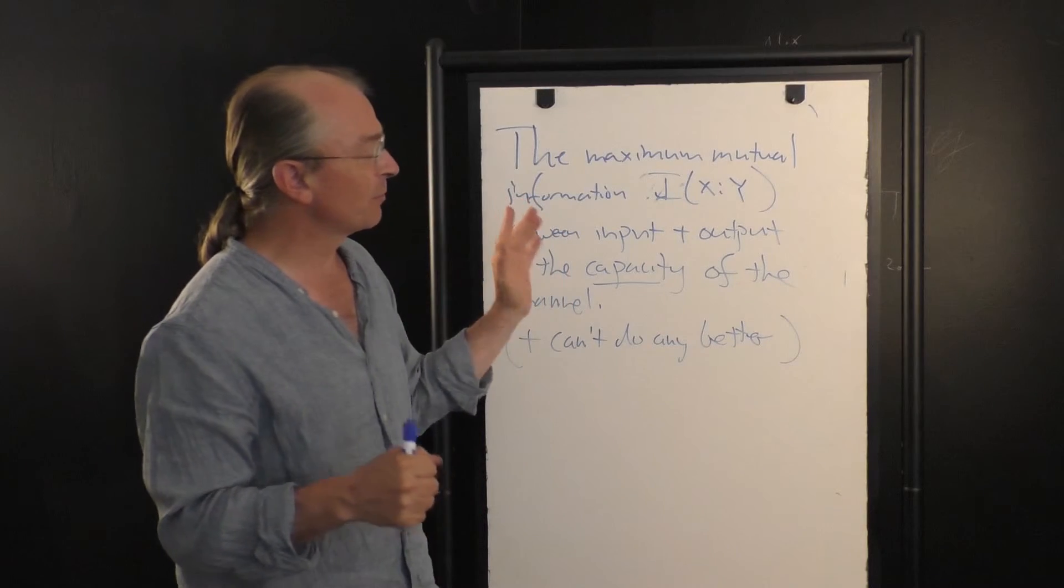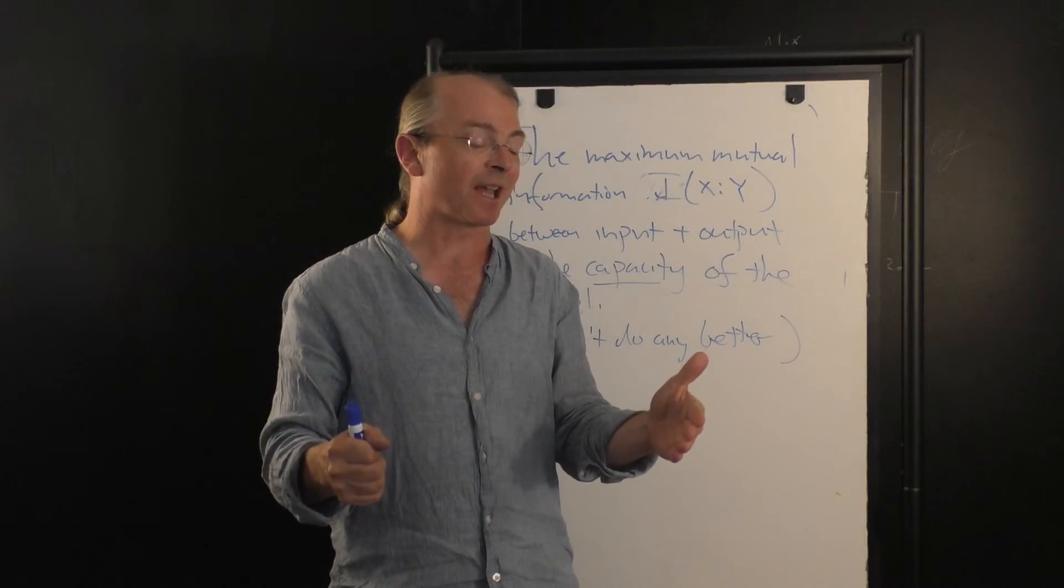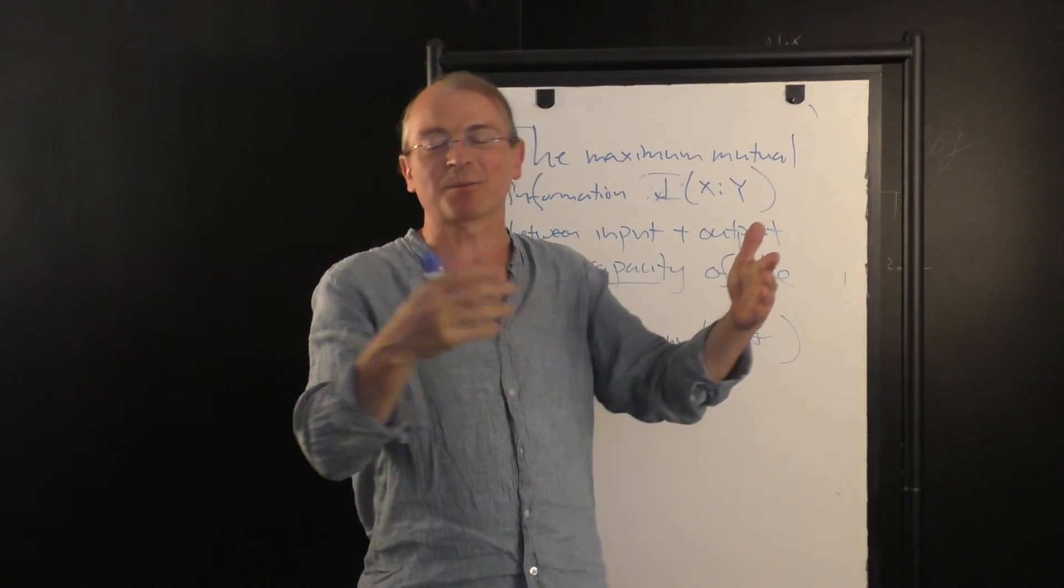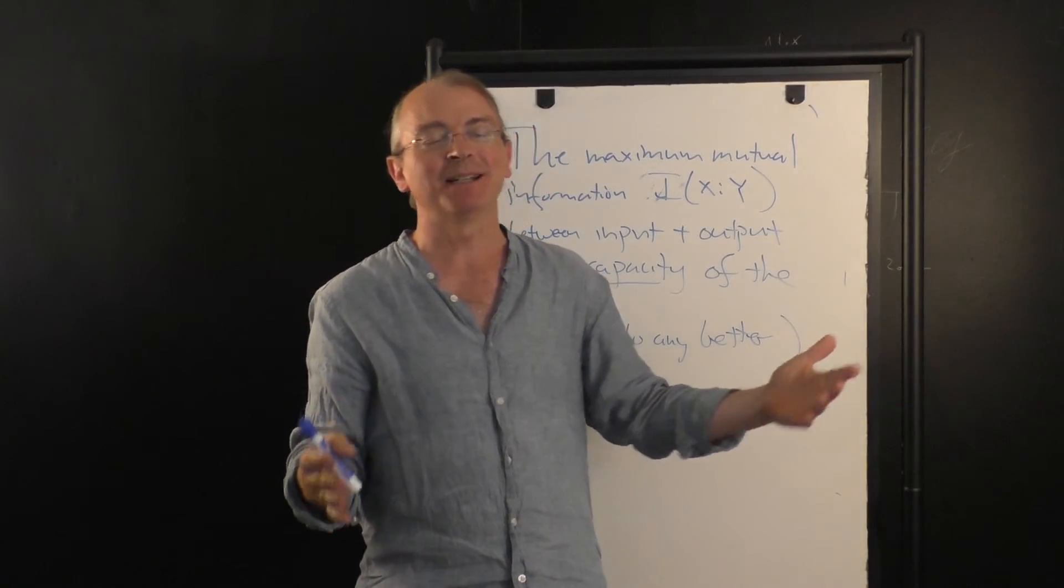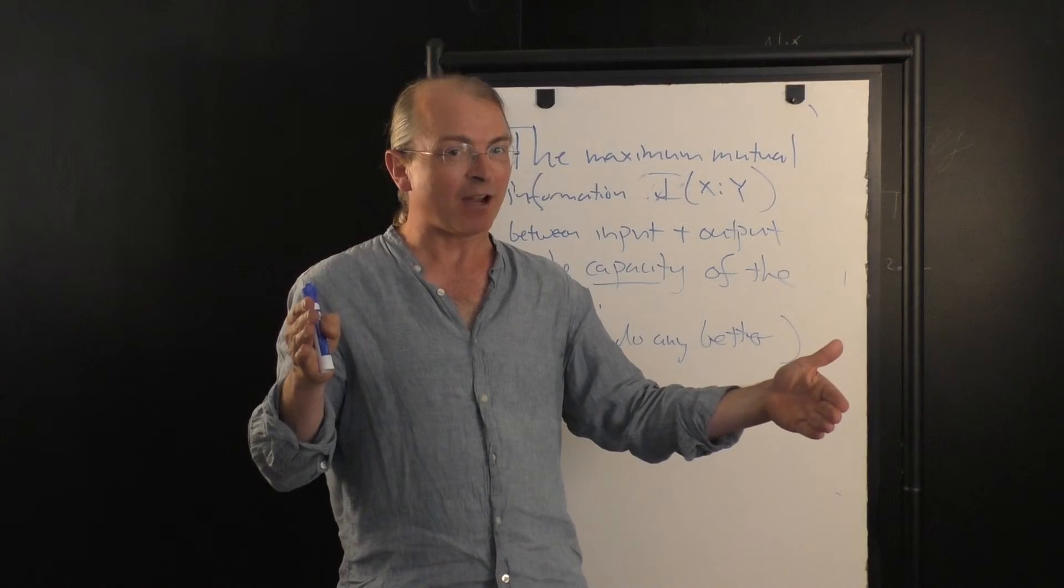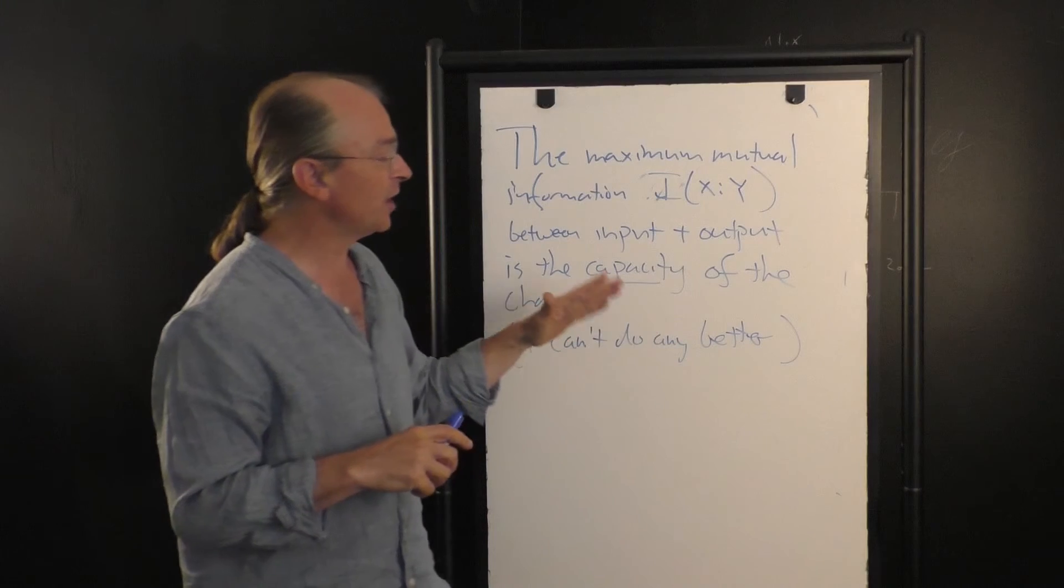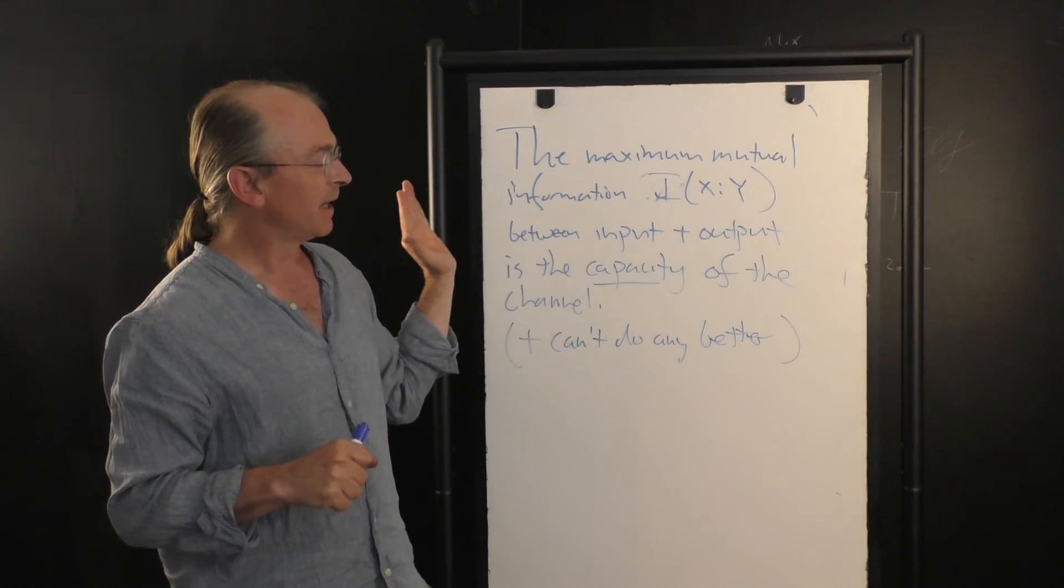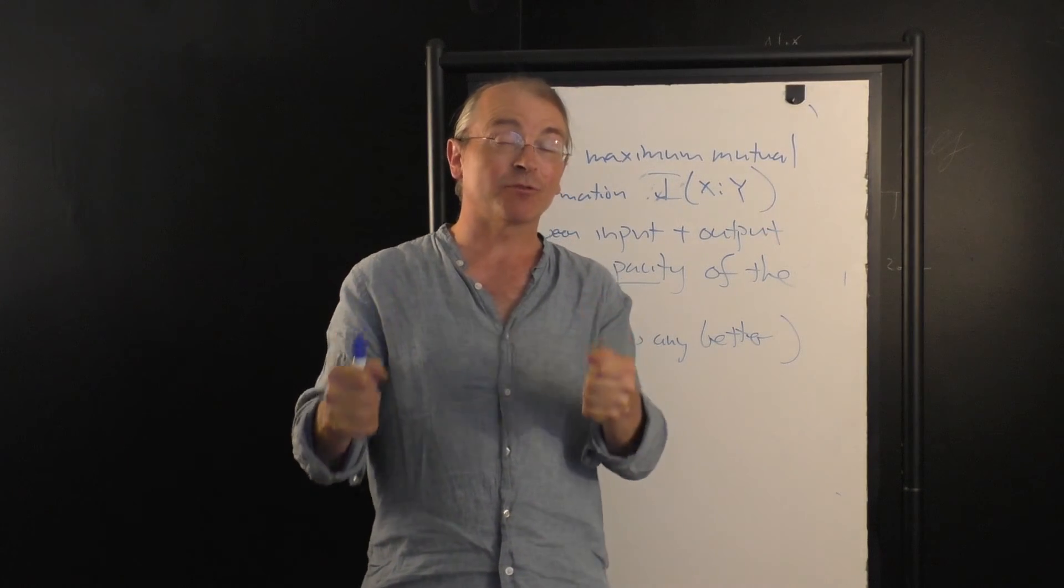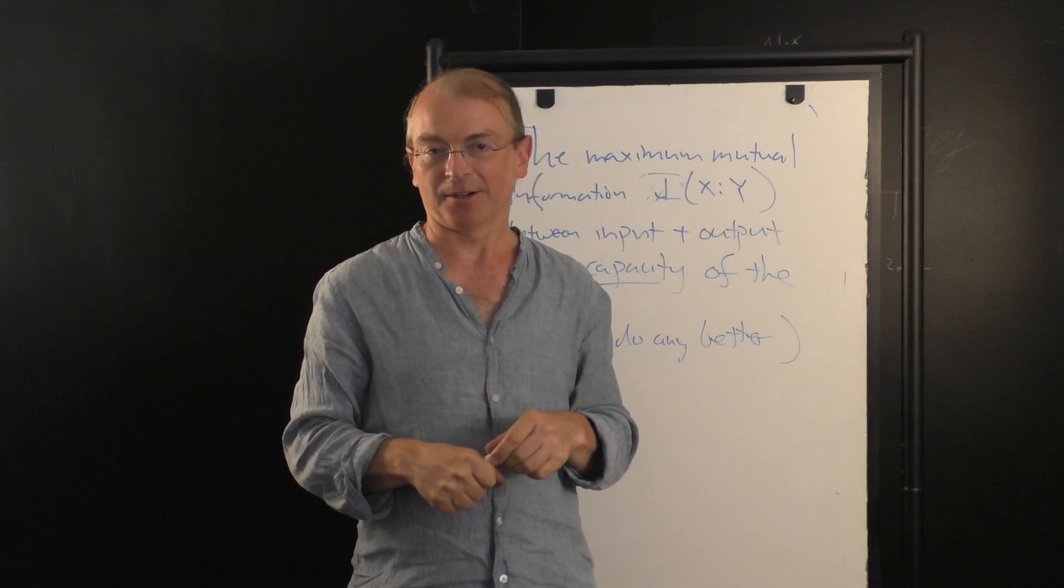So the mutual information between input and output, not only in the kind of intuitive information theoretic sense, tells you how much information gets through the channel, just saying, hey, it's a certain number of bits. It's the number of bits the input and the output share in common. It's the number of bits by which the uncertainty of the input is reduced if you look at the output. It's an intuitive picture of information, albeit quantitative. It actually has this very deep and profound consequence for how accurately, how much information you can send down a noisy channel and decode it reliably at the far end.